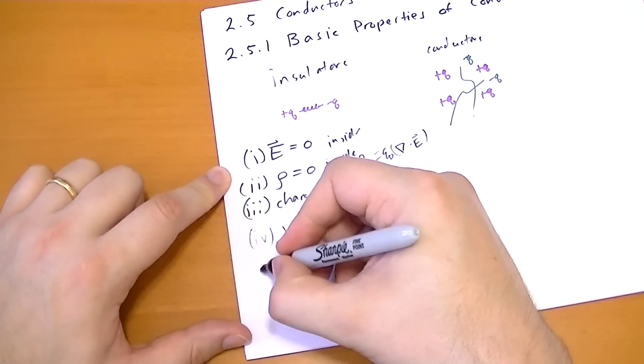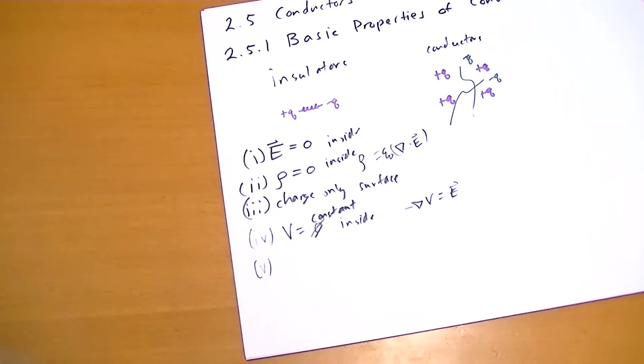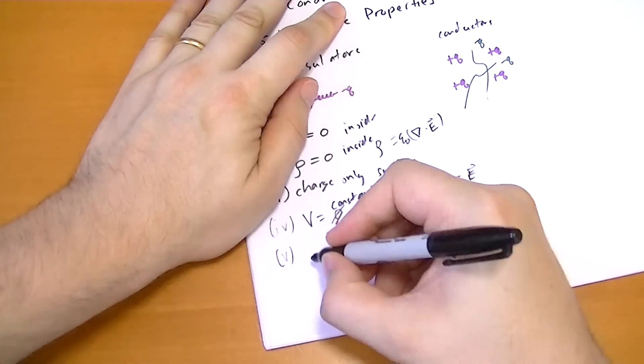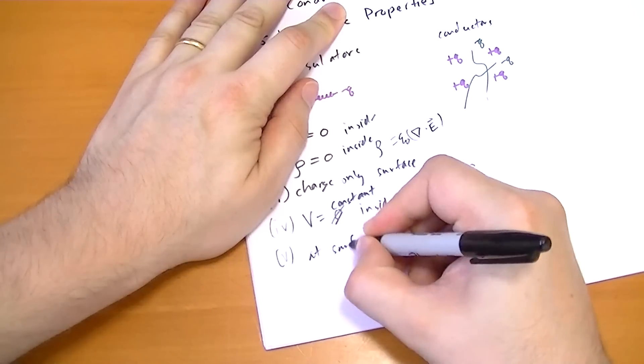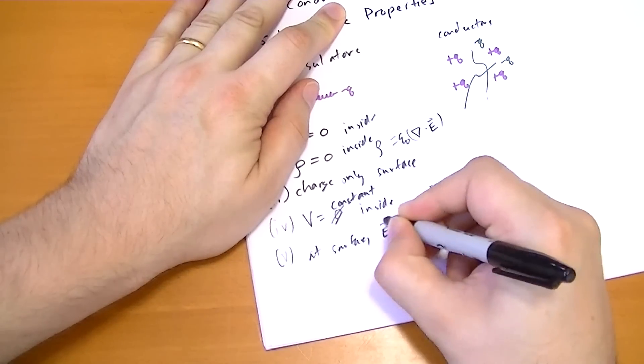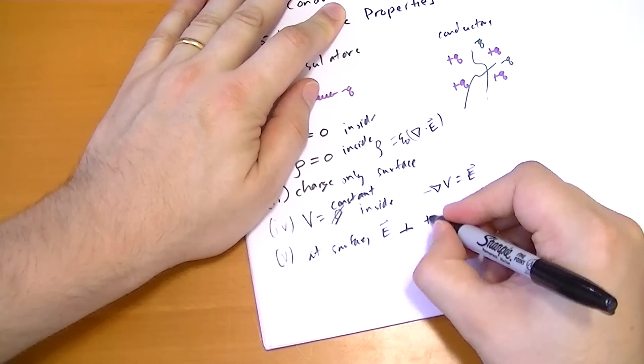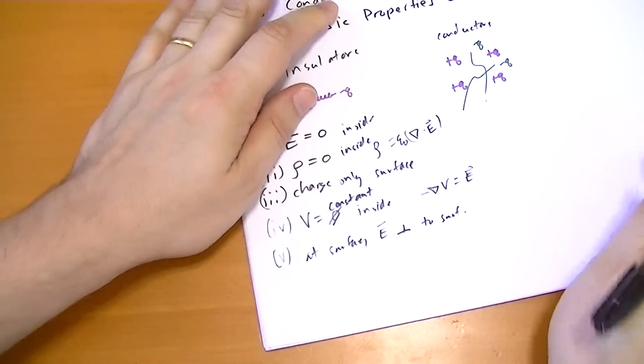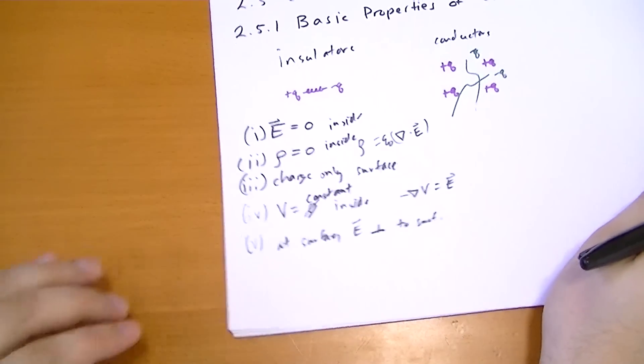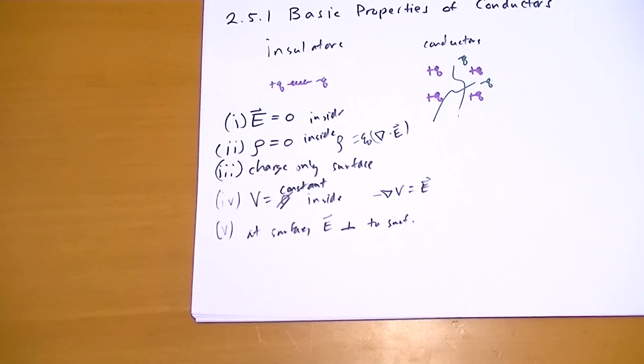And point five is that at the surface, the electric field has to be perpendicular to surface. If you had any parallel component to the electric field at the surface of a conductor, then the charges at the surface would move along that parallel component and cancel it out.